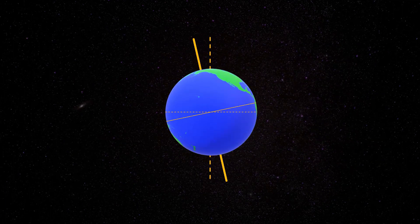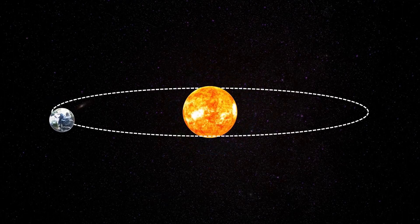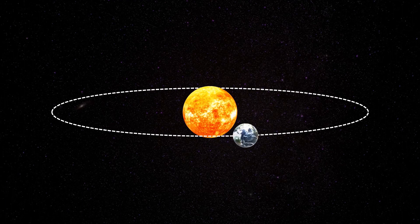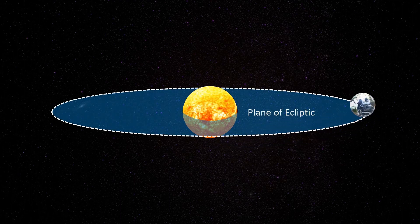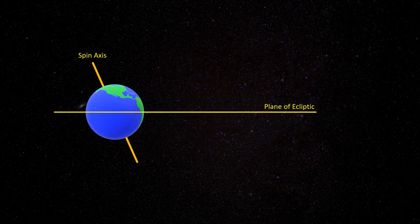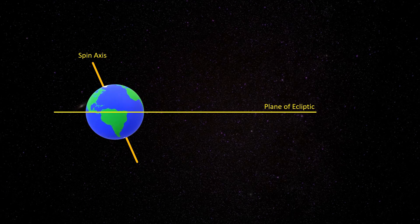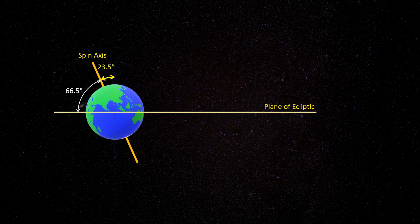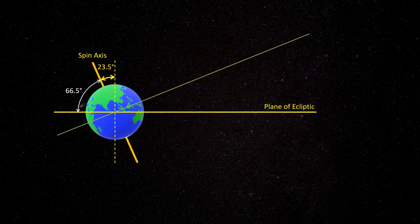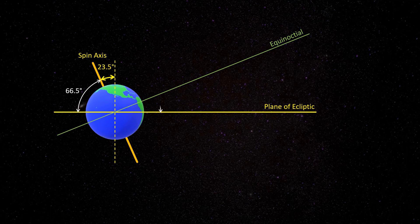The real reason for seasonal change of the earth is due to the tilt of the earth. Before we can discuss the tilt of the earth, we need to define the plane of ecliptic. The plane on which the earth orbits around the sun is known as the plane of ecliptic. The angle between the earth's spin axis and the plane of ecliptic is 66.5 degrees, and the angle between the earth's spin axis and the perpendicular to the plane of ecliptic is 23.5 degrees. If we extend the equator into space, we get another plane known as the equinoctial. The equinoctial is perpendicular to the earth's spin axis, and the angle between the equinoctial plane and the ecliptic plane is also 23.5 degrees, also known as the obliquity of the ecliptic.